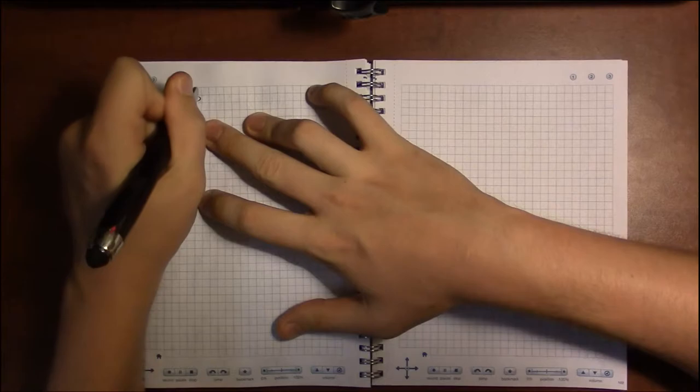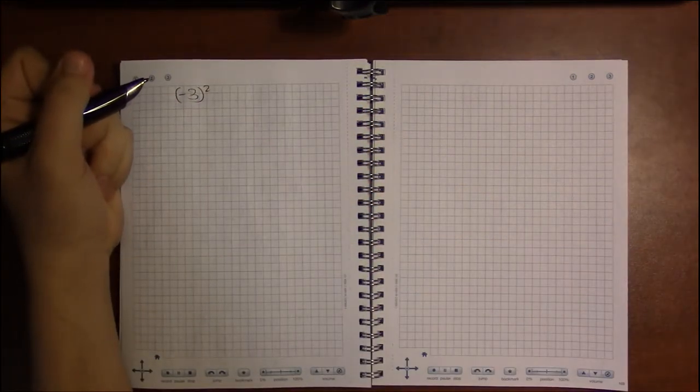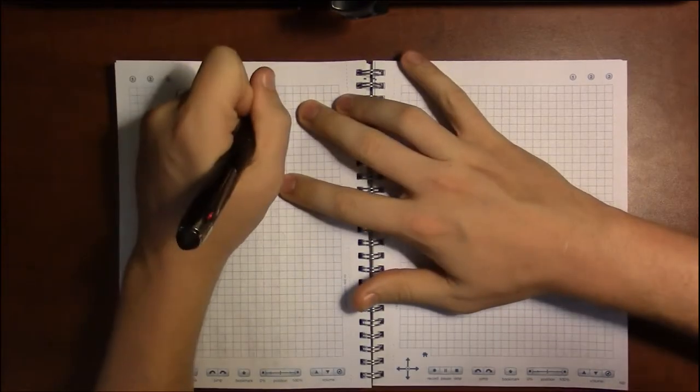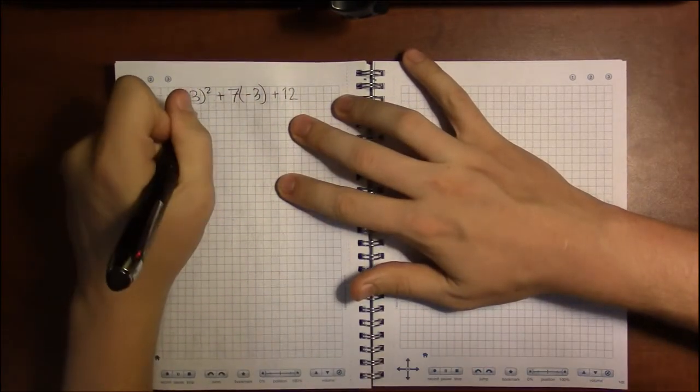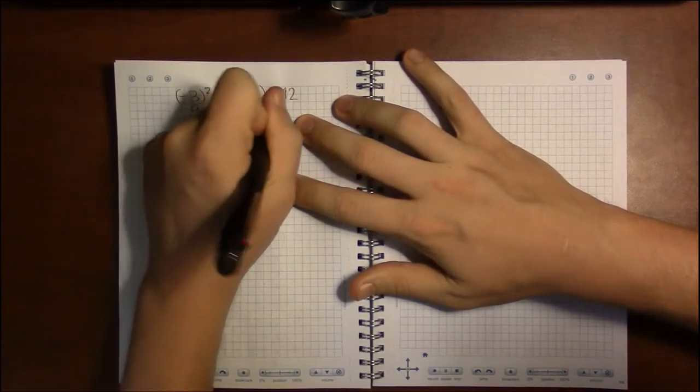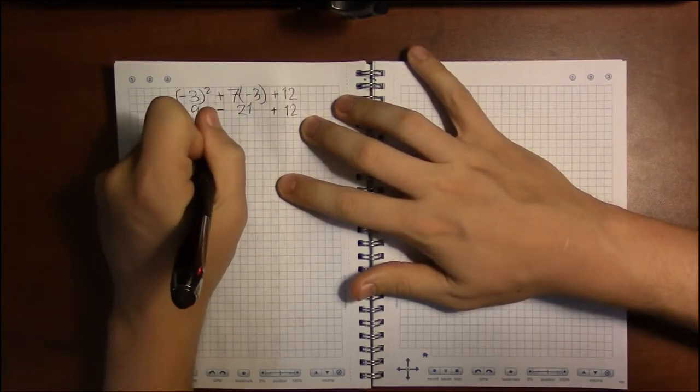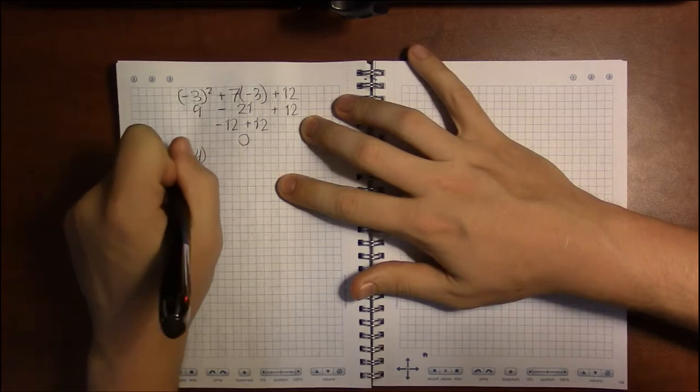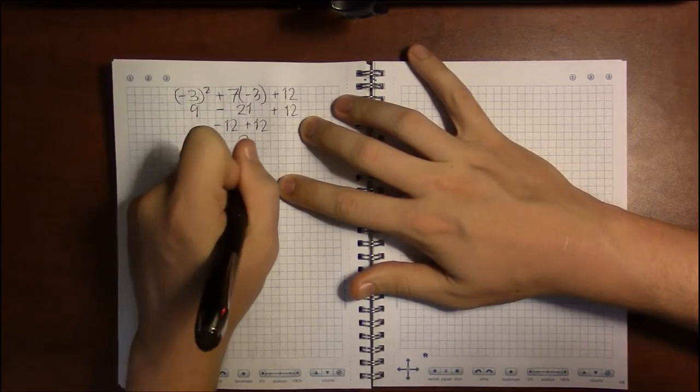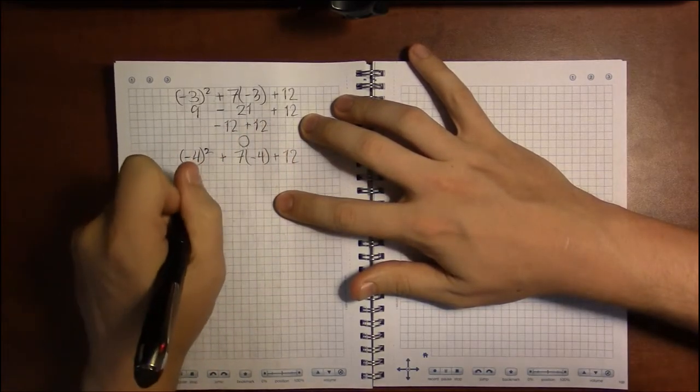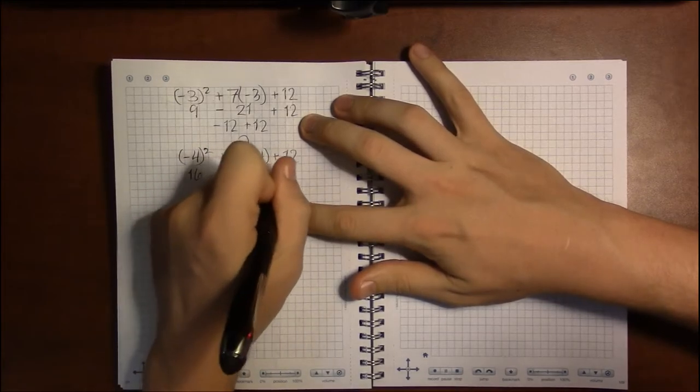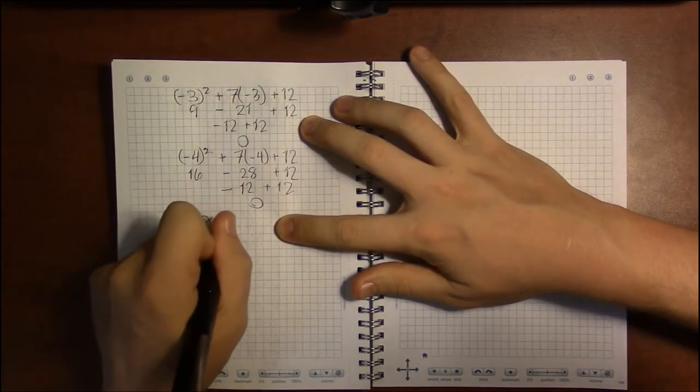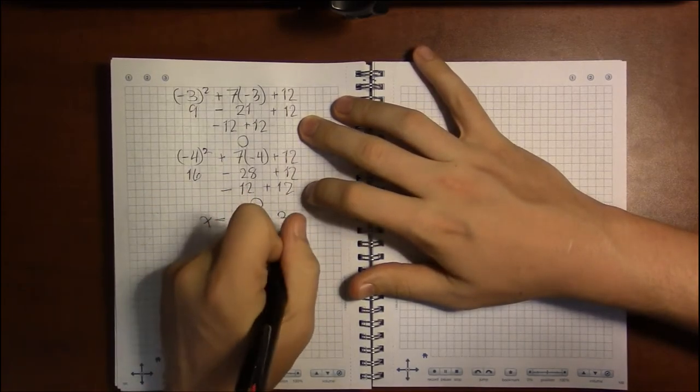So we're going to have minus 3 squared and then plus 7 times minus 3 plus 12. That's 9 minus 21 plus 12 which is minus 12 plus 12, that's 0. And then for minus 4, minus 4 squared plus 7 times minus 4 plus 12. That's 16 minus 28 plus 12. 16 minus 28 is minus 12 plus 12, that's 0. So our solutions are 1, 2, and 3.